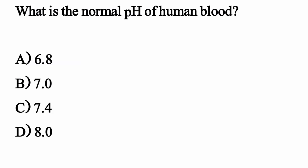What is the normal pH of human blood? The correct option is Option C: 7.4.